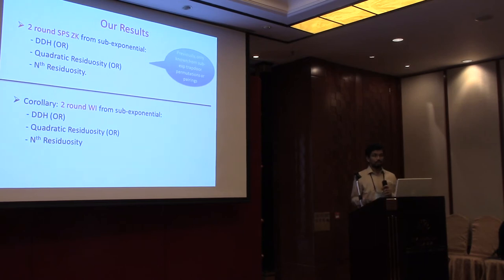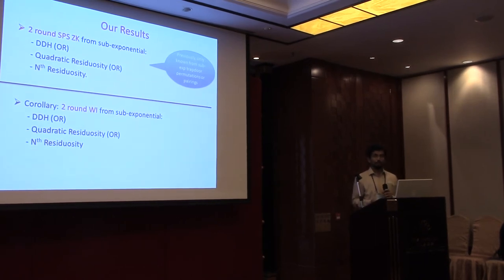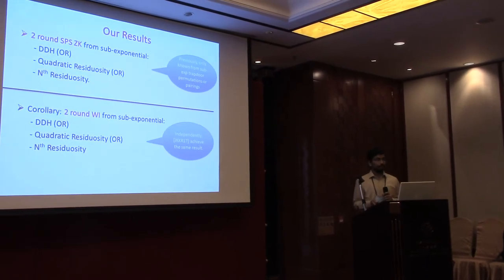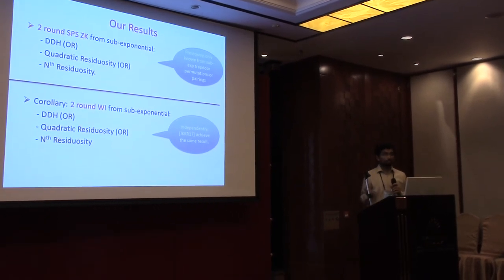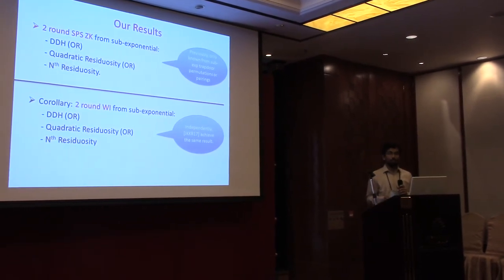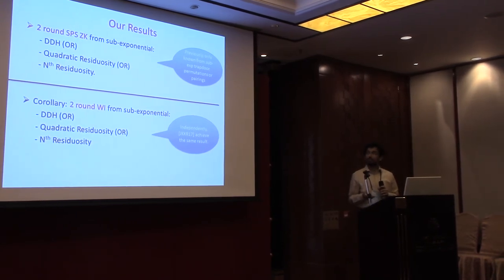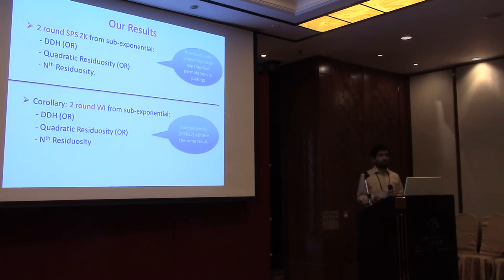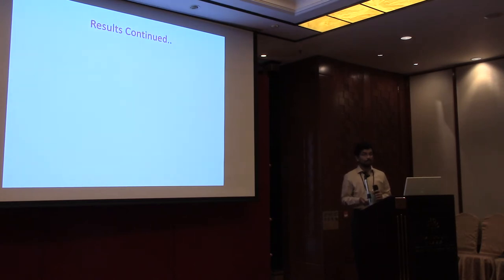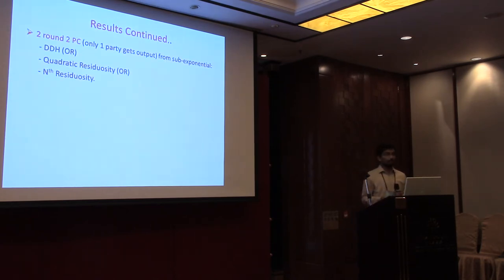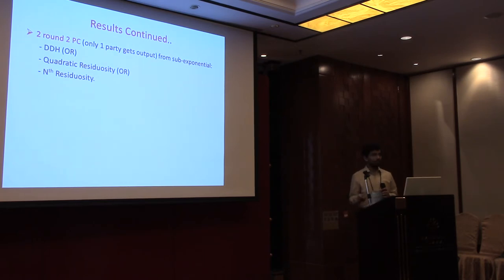This was only known from trapdoor permutations before. I'd also like to mention that independently, another work by Jane and others achieved the same result for WI, but they had some other results which are not similar to ours. Moving to the more general setting of secure computation for all functionalities, we achieve two-round two-party computation where only one party gets the output from the same sub-exponential assumptions. If you want both parties to get output, it directly extends to just a four-round protocol.